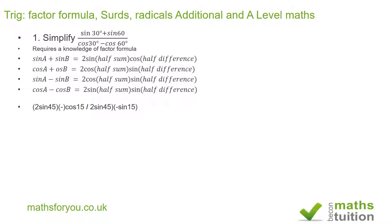The two sine 45 terms in the numerator and denominator cancel out. We then end up with minus cos 15 divided by minus sine 15, which is the same as cos 15 divided by sine 15, and the answer is cot 15 degrees.